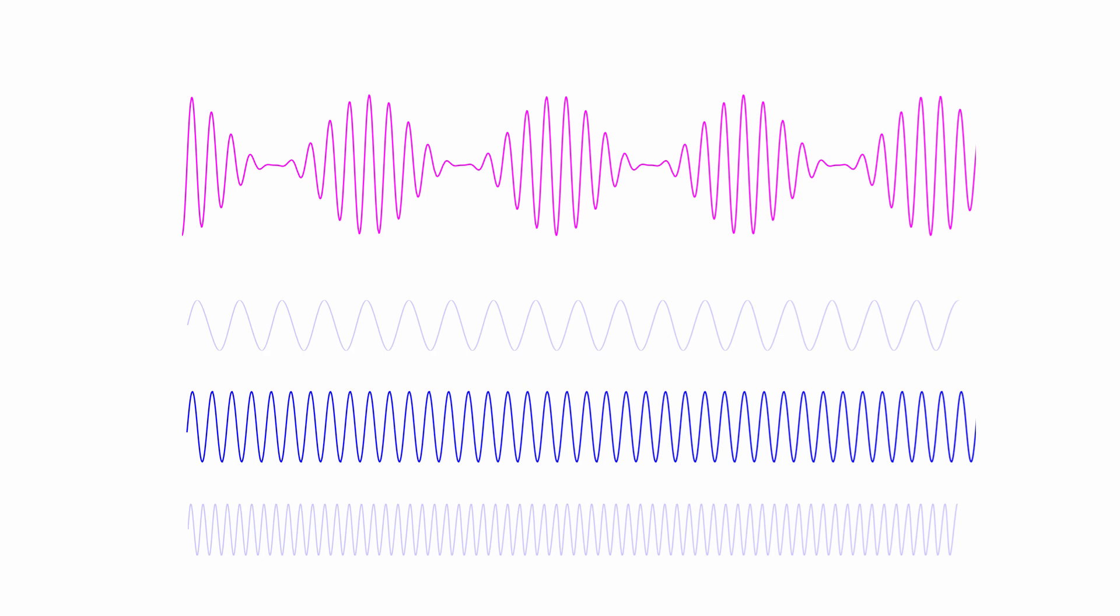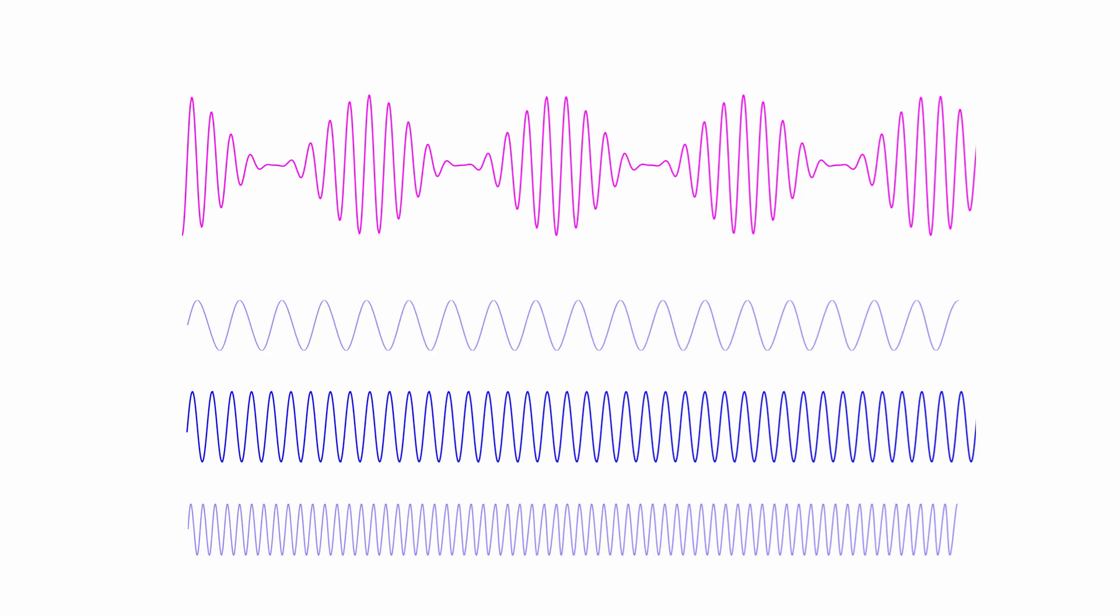Now, if the modulated wave is decomposed using a Fourier transform, we find that there are actually three components instead of the original two, which might seem counterintuitive. The reason for this is that when a mixer multiplies the modulating wave by the carrier, signals at new frequencies are in fact generated. One of these new signals appears at a frequency which is equal to the sum of the frequency of the modulating wave and the frequency of the carrier wave. And the other appears at a frequency which is equal to the difference between the frequency of the modulating wave and that of the carrier wave.